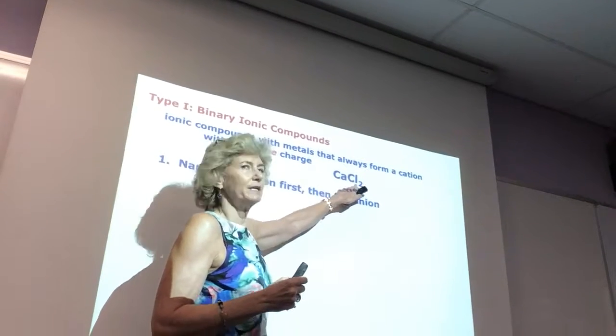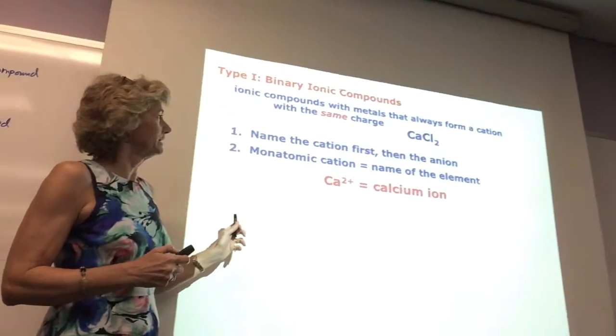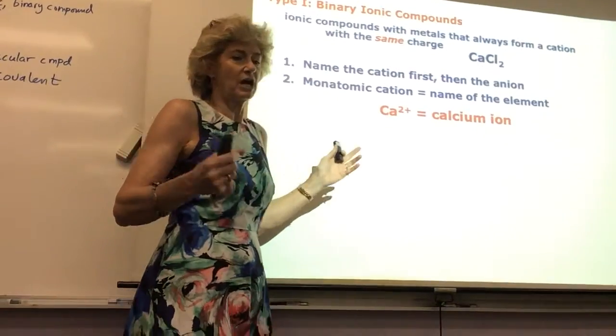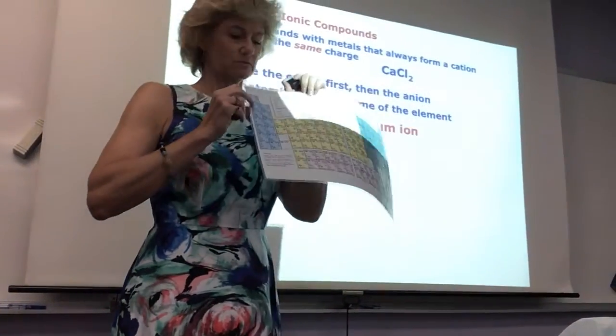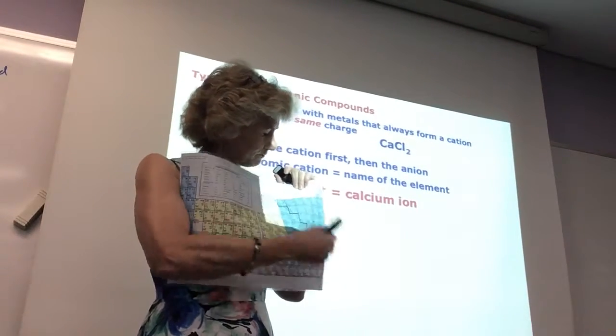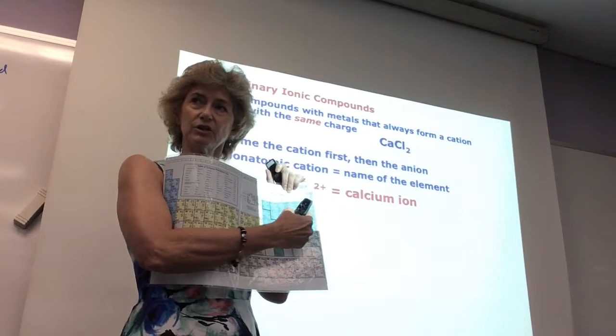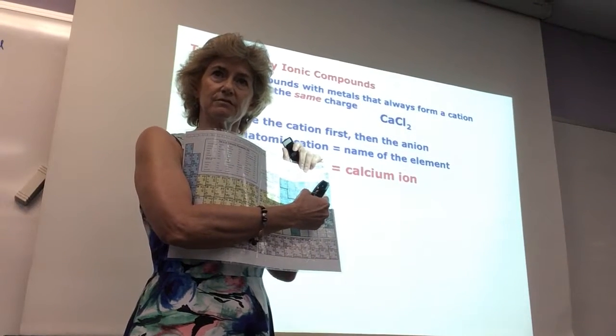So if this is chlorine, and you turn it into the ion, what do you call it? Chloride. So you just read left to right. Calcium with a plus two charge. How do we know it's plus two? Because it's right here in group two. How do we know chloride is minus one? Because it's right here in group seven, and they always get a minus one charge, and then they have noble gas configuration.